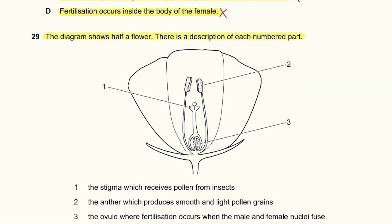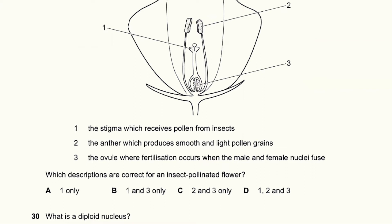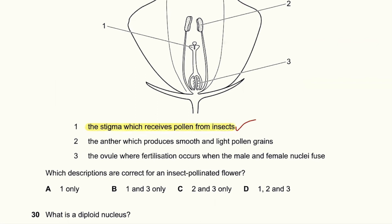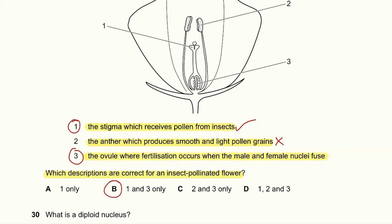Question 29: The diagram shows half a flower with descriptions of numbered parts. Part one is the stigma, which receives pollen — that is correct. Part two is the anther, which produces smooth and light pollen grains — that is problematic because smooth and light pollen is for wind pollination, not insect pollination. Part three is the ovule where fertilization occurs when male and female nuclei fuse — that is correct. So descriptions one and three are correct, and B is the answer.